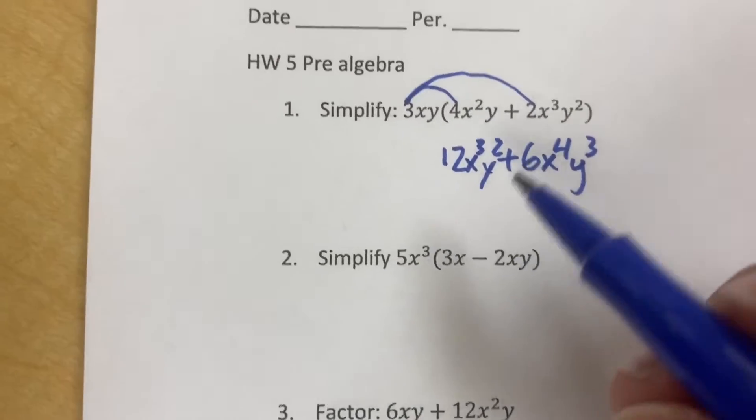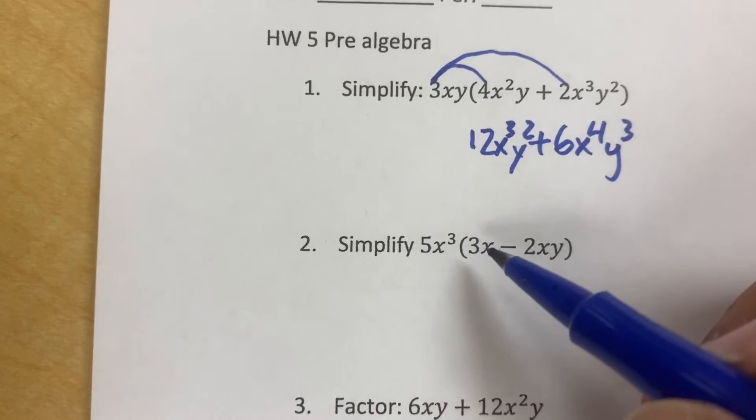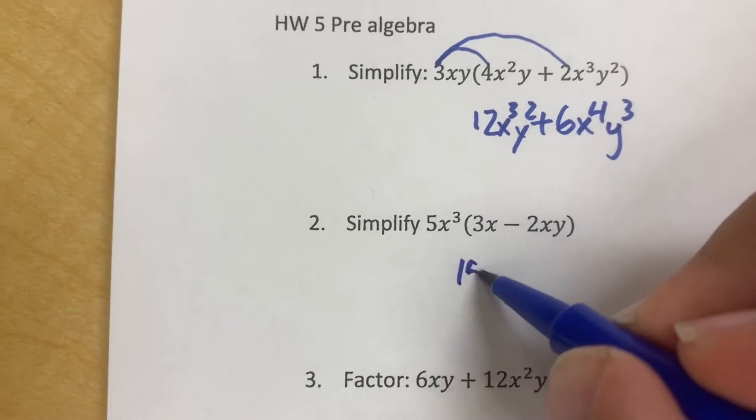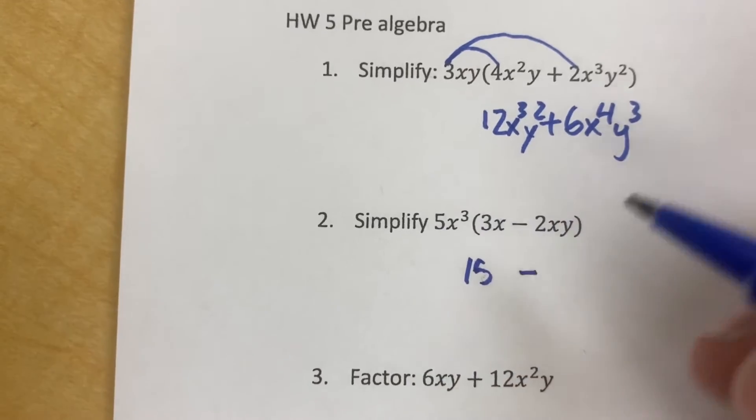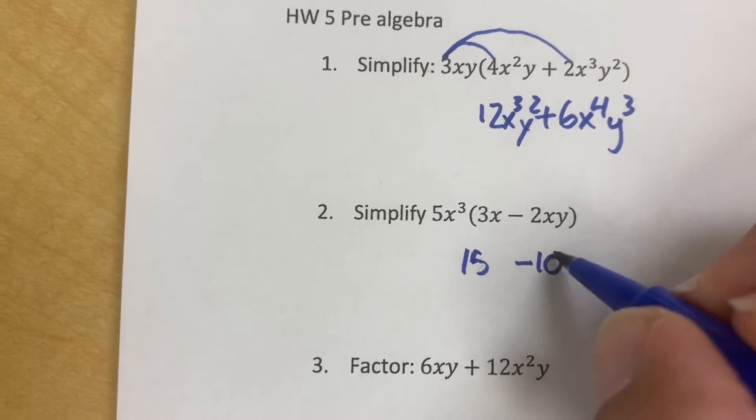Let's see it done again over here. So 5 times 3, that's going to make 15, the minus stays there. 5 times 2, that's going to make 10.